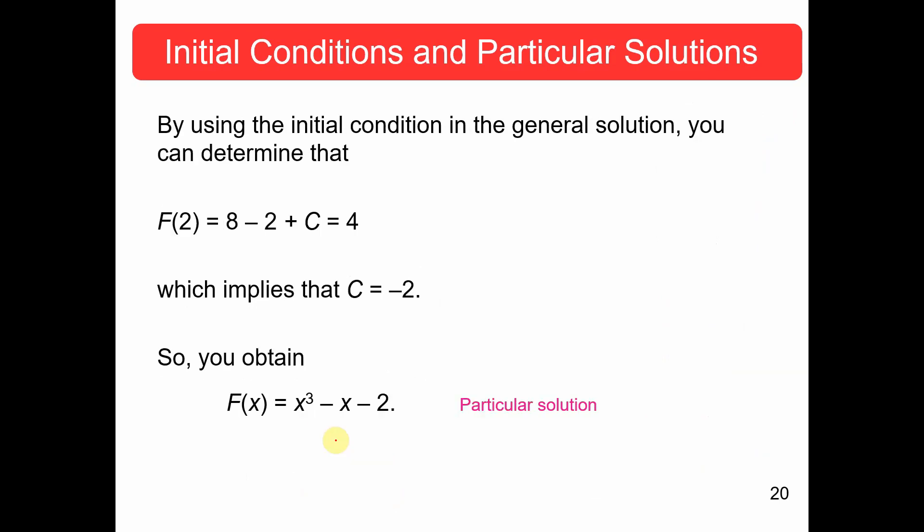So, I get 4 equals 2 cubed minus 2 plus C. So, when I solve this, that's 8 minus 2 plus C equals 4. We can solve that out. We get C equals negative 2. Therefore, instead of having x cubed minus x plus C, we just change that C into negative 2, and we have a particular solution.